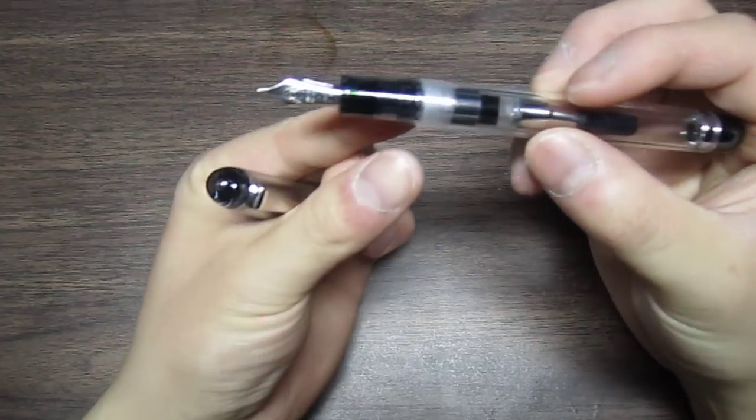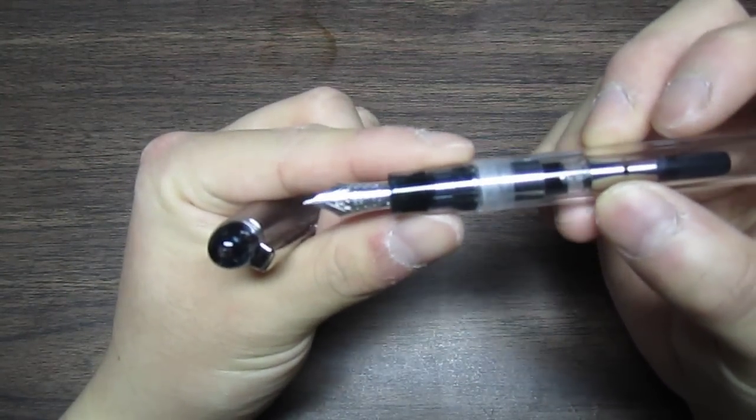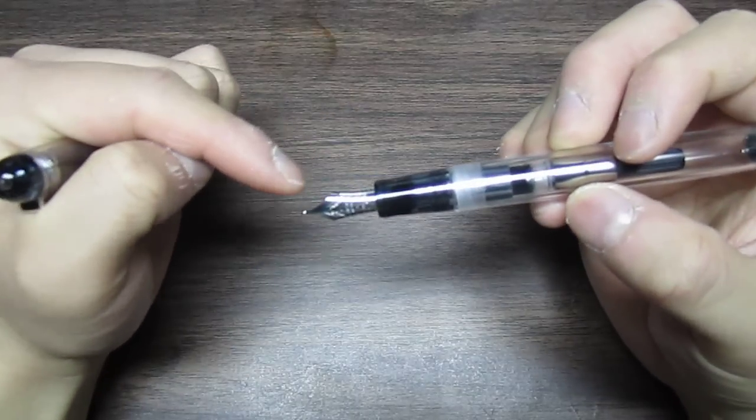Basically, with a fountain pen, you're writing with the nib. It's not gonna focus because I'm using my regular digital camera, but you're writing with the nib.